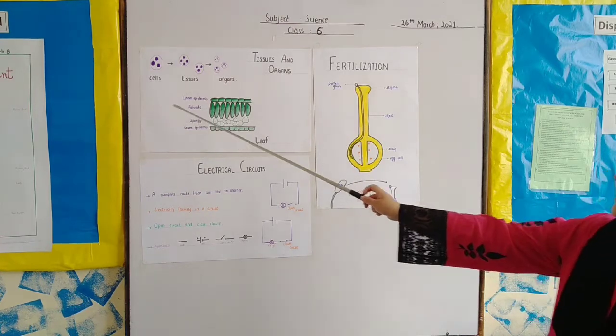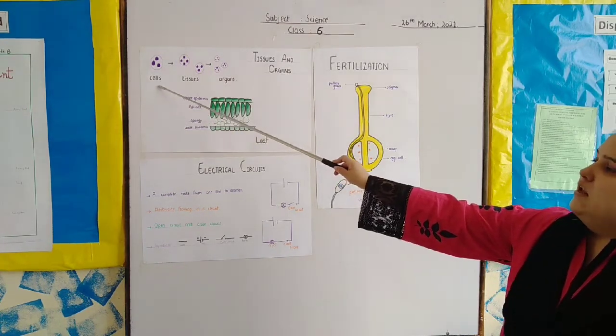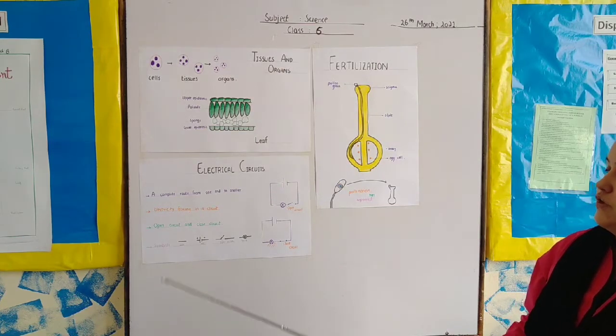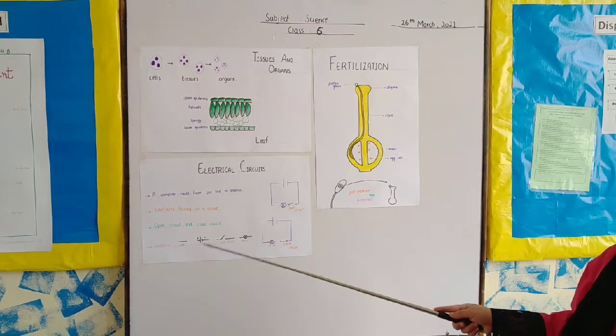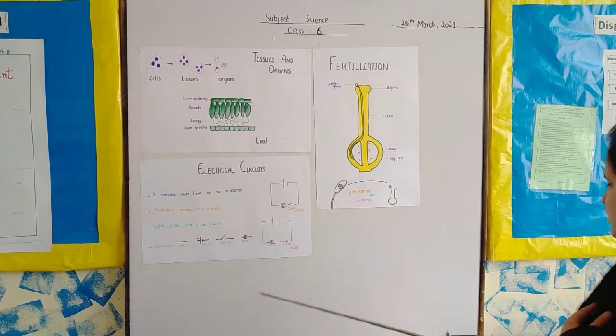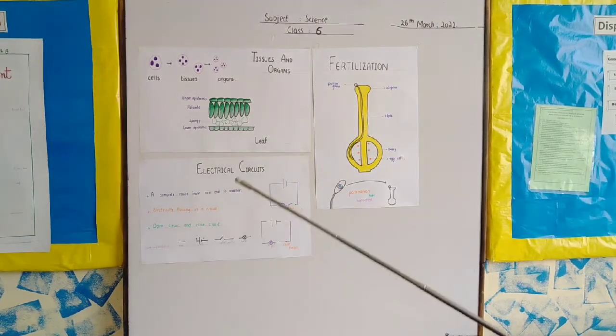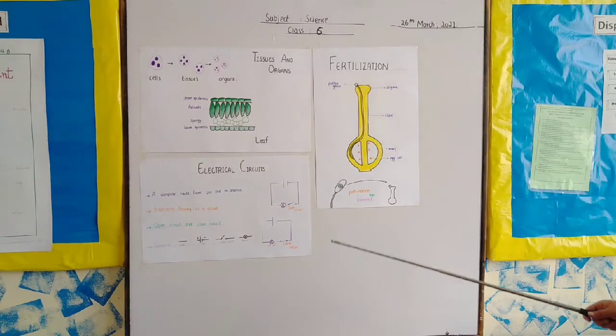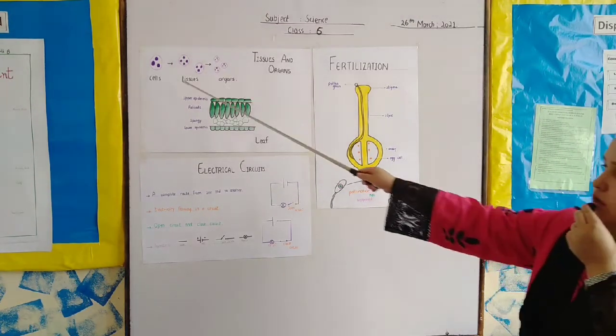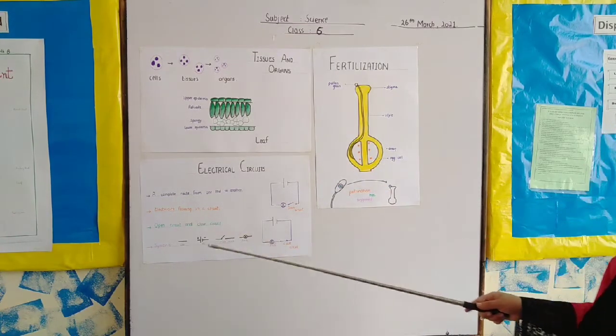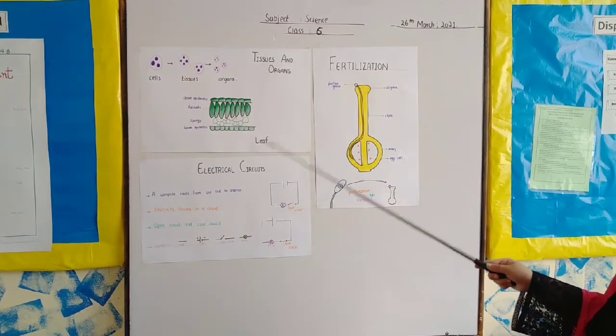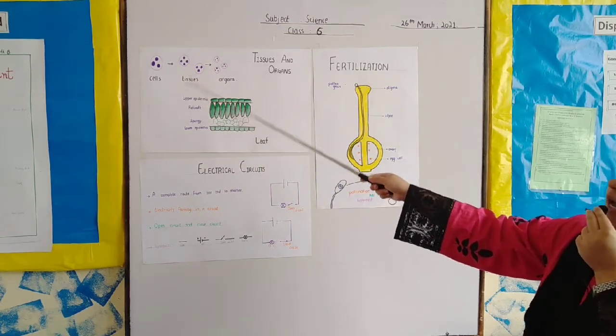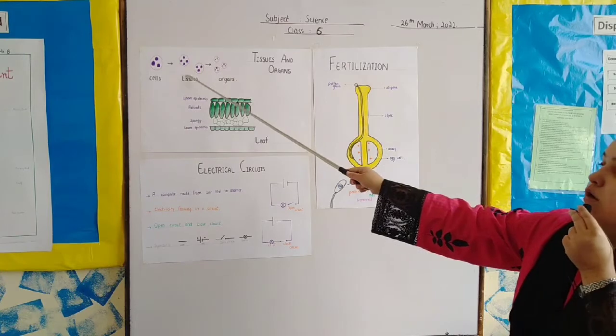So first we say cells. What is a cell? A cell is the smallest part or structure of a human body. Now when cells which look similar and they also do the same job, we say that those cells combine together to form a tissue.